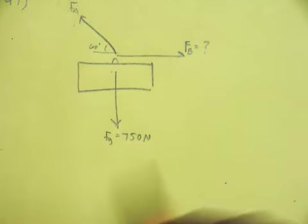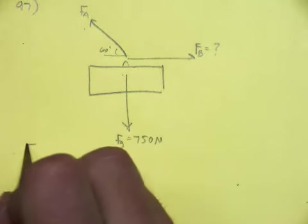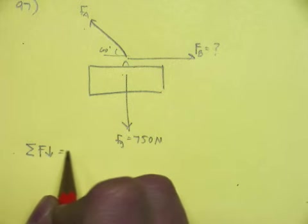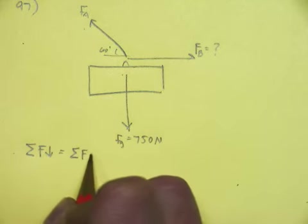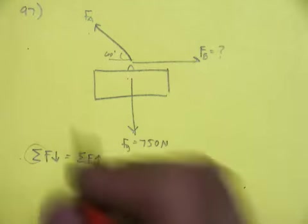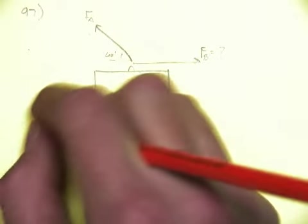Now, the trick to this is that everything that pulls down has to equal everything that pulls up. This is just a Greek letter that means you add everything up. So basically, I guess what I'm really saying is the net force on this is zero.